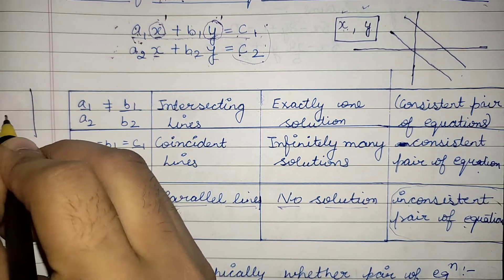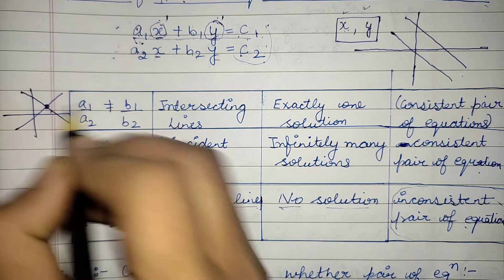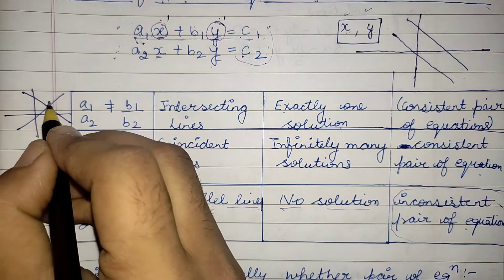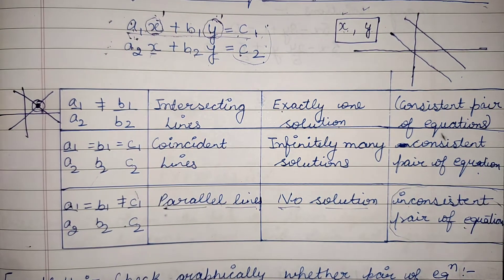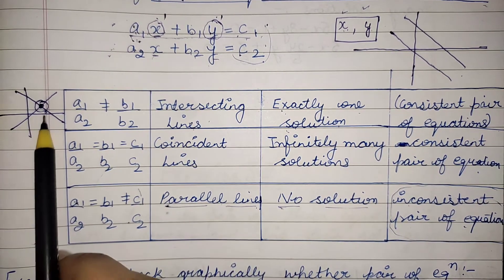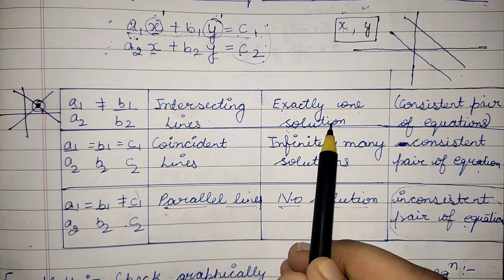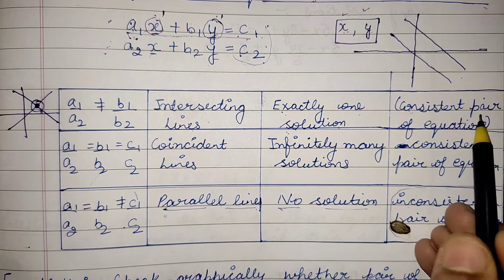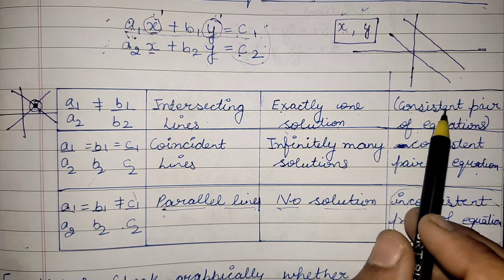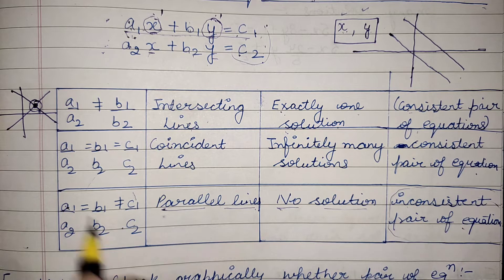Another possible case is that the two lines intersect each other at a single point. The number of intersecting points equals the number of solutions. If the lines intersect at a single point, there is exactly one solution. This is called a consistent pair of equations.